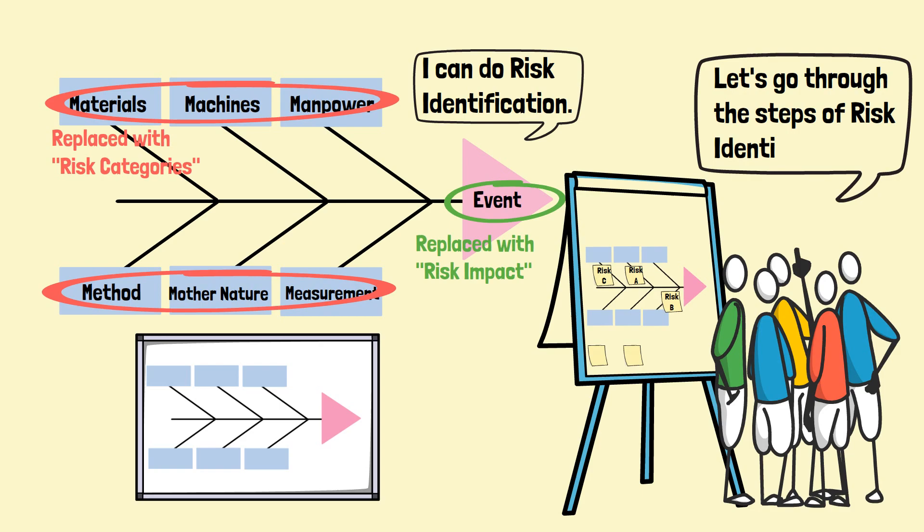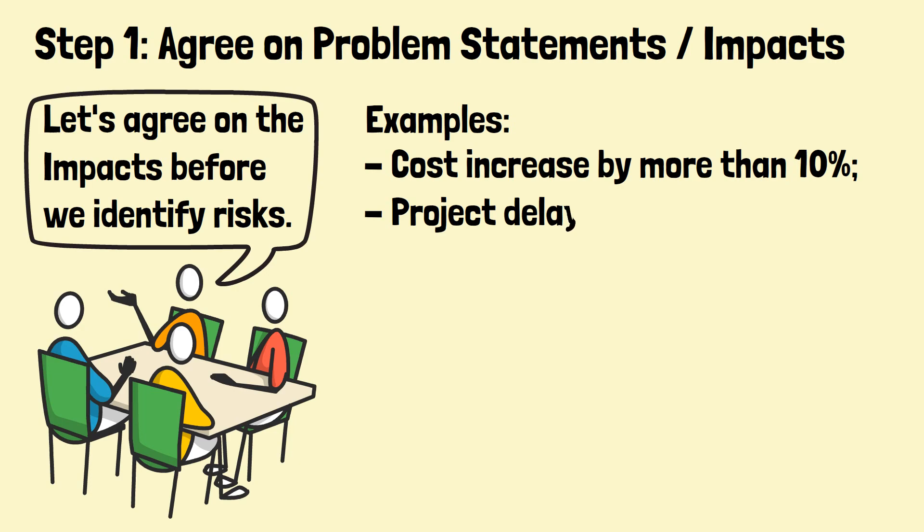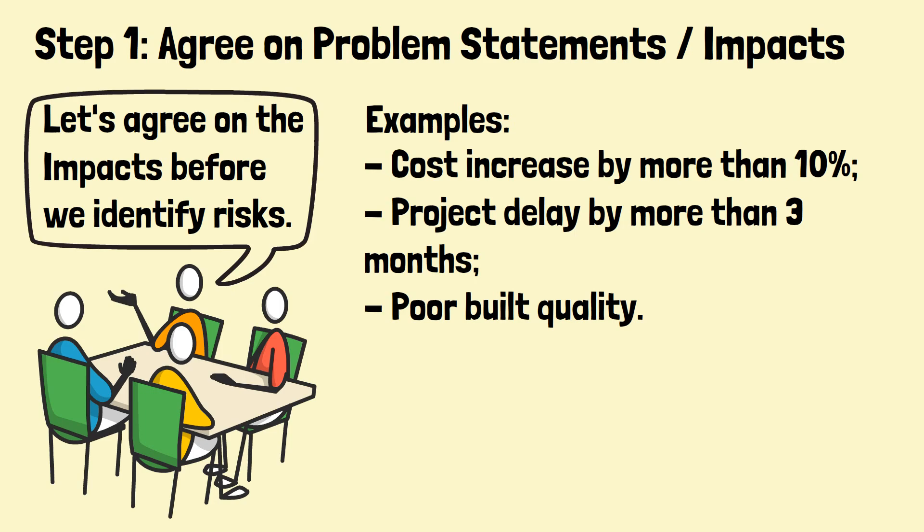Let's discuss the steps of risk identification. Step 1: Agree on the problem statements or impacts. The participants shall first identify the impacts of the project. Examples are cost increase by more than 10%, project delay by more than 3 months, and poor built quality. Each impact will then be written on a fishbone diagram.